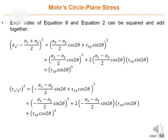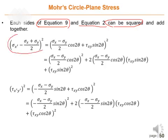Each side of equation 9 and equation 2 can be squared and added together. Squaring equation 9 first: [sigma x-prime minus (sigma x + sigma y)/2]² equals [(sigma x minus sigma y)/2 × cos2θ + tau xy × sin2θ]². And squaring equation 2: tau x-prime y-prime squared equals [-(sigma x minus sigma y)/2 × sin2θ + tau xy × cos2θ]².